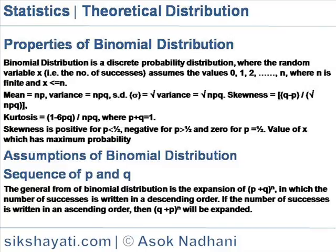Skewness is positive for p less than half, negative for p greater than half, and zero for p equal to half. The value of x which has maximum probability.